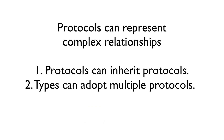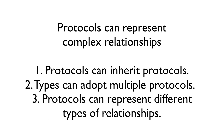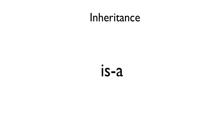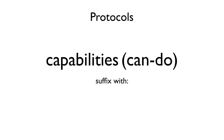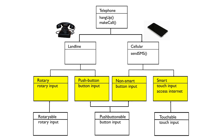The third reason protocols can introduce more complex relationships between types is that protocols can represent all types of relationships. Inheritance usually places an emphasis on an is-a relationship — for example, a cellular is a telephone. Protocols can introduce other types of relationships, such as capabilities or a can-do type of relationship. For convention, we generally suffix these sorts of relationships with -able or -ing. We saw these sorts of can-do relationships with the input types in our example: rotary-able, pushbutton-able, and touchable.